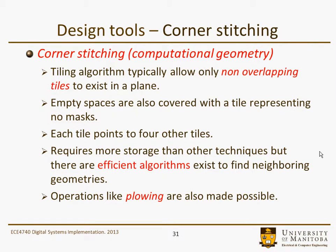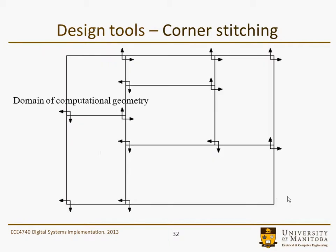Corner stitching is a computational geometry technique that allows non-overlapping tiles to exist in a plane. Although it may be a bit more difficult for humans to work with, it lends itself to efficient algorithms — for example, finding neighboring geometries, and operations like plowing become more easily possible. Here's an idea of what a geometry might look like if it's corner-stitched: all different-sized rectangles stitched together to cover the plane.